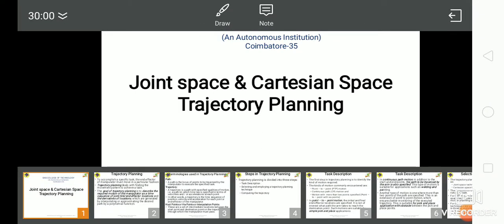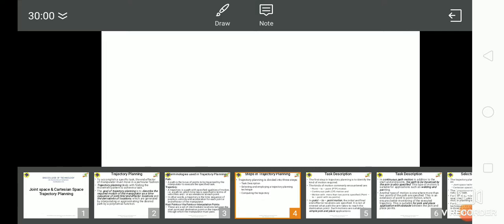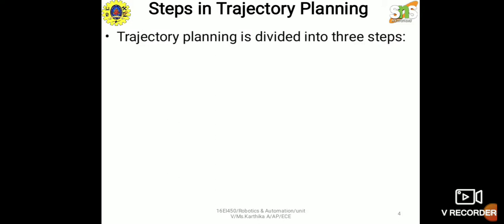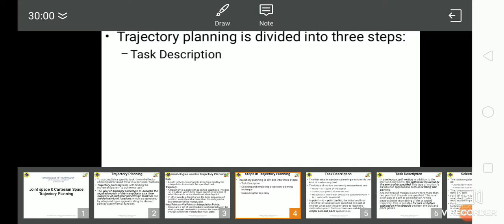Next, the steps in trajectory planning. The first step is task description. The next step is to identify the kind of motion required. The kinds of motion commonly encountered are point-to-point (P2P) motion, continuous path (CP) motion, and motion with more than two points specified — point-to-point with via points. In point-to-point motion, the initial and final end effector locations are specified, and it is not of interest what path the arm takes to reach the destination. Such motions are suitable for simple pick-and-place applications.